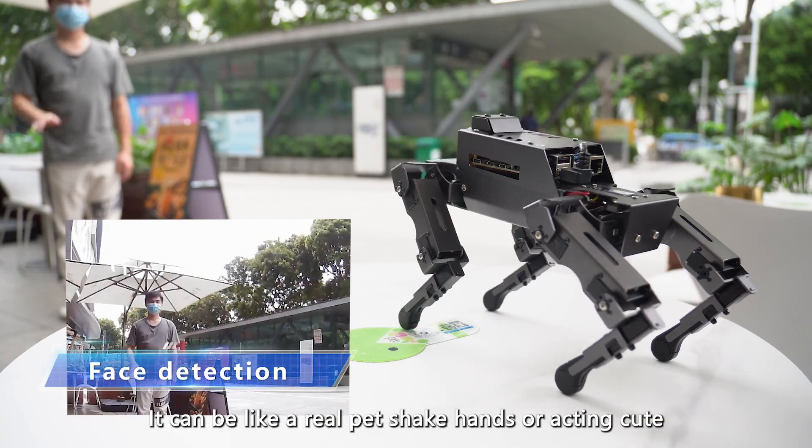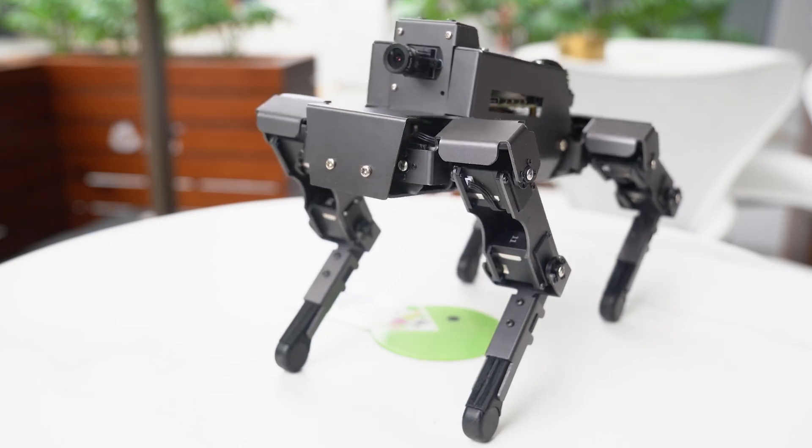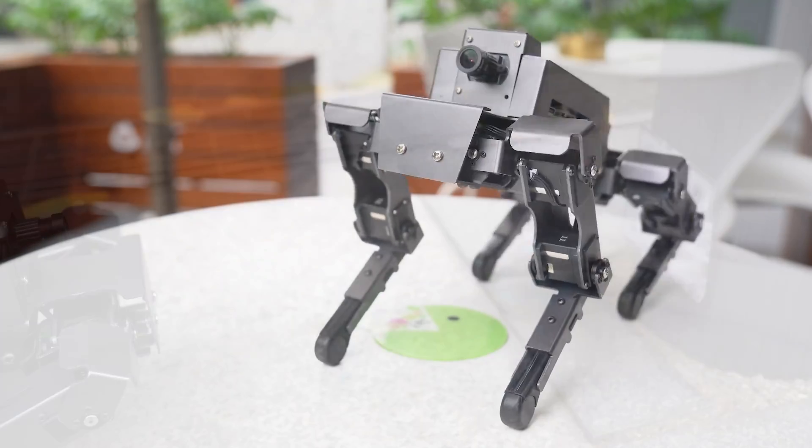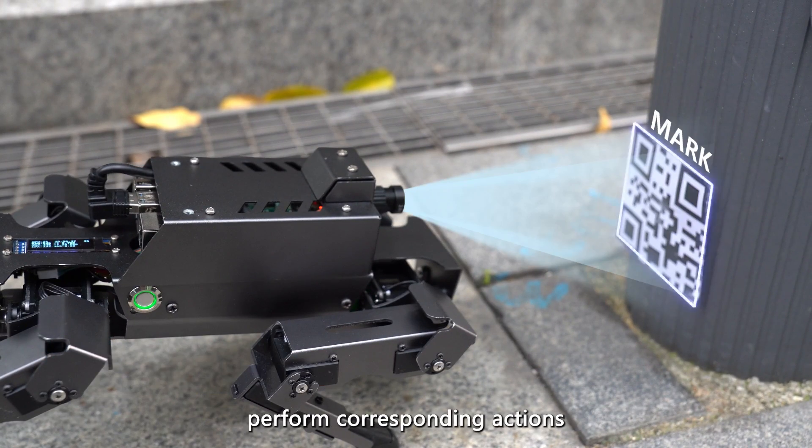When Dogzilla detects a face, it can be like a real pet, shake hands, or act cute. Dogzilla can also obtain QR code instructions and perform corresponding actions.